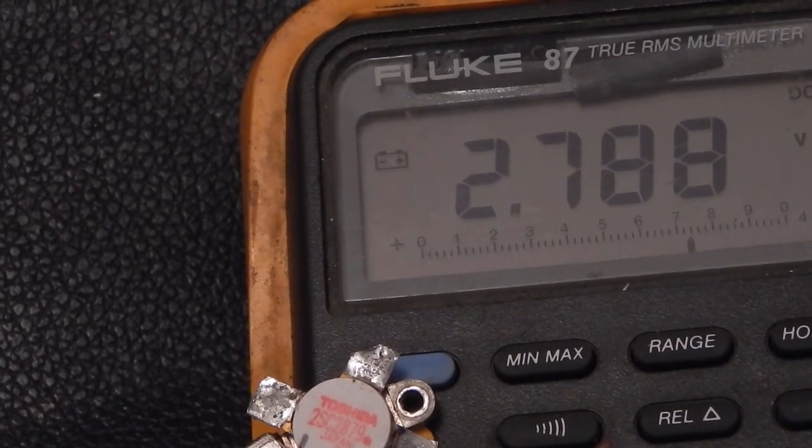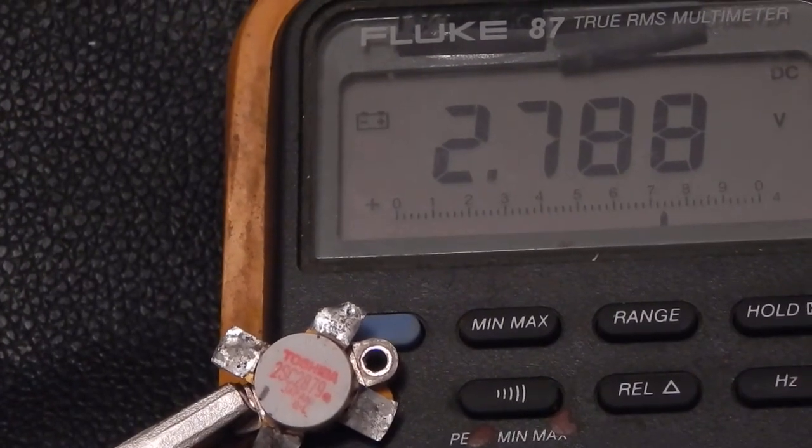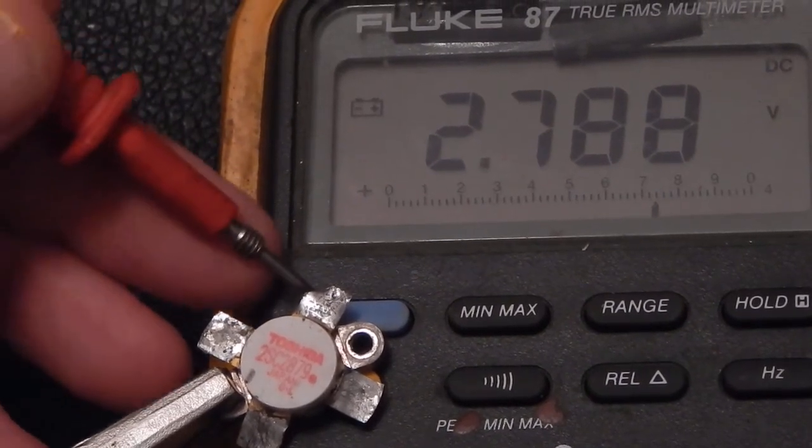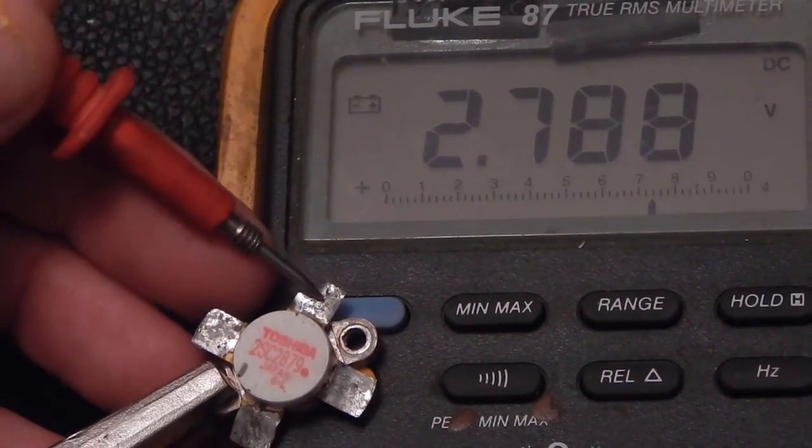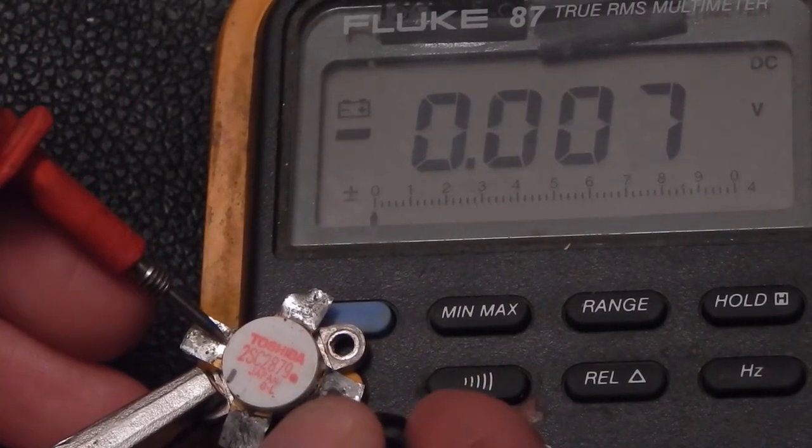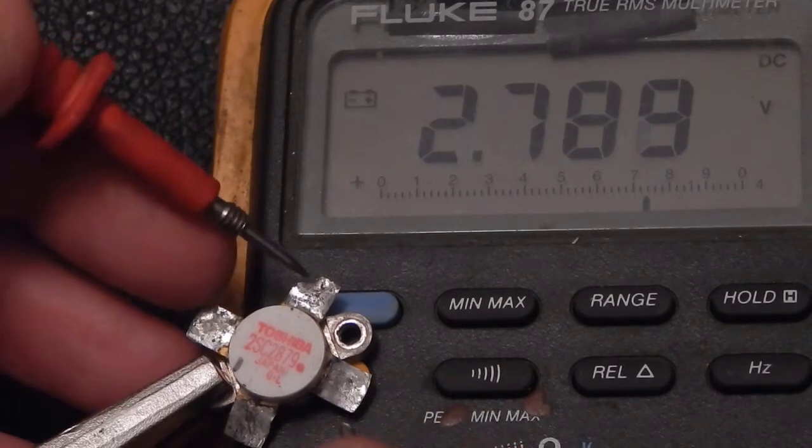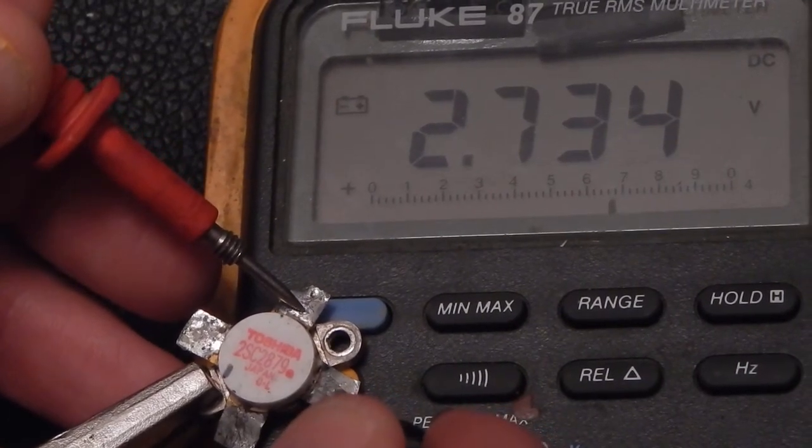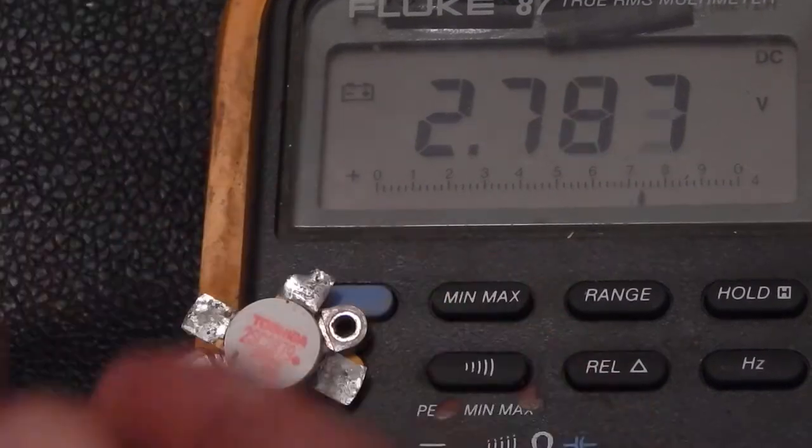So we're going to check them. This is number one here. We'll go across the two emitters - that is shorted like it should be. Now we will go collector to emitter - open. Reverse...